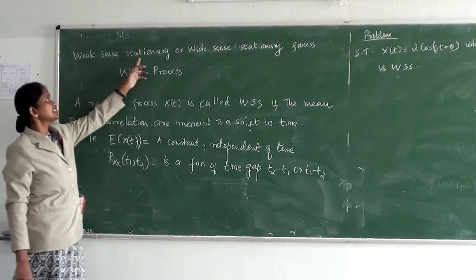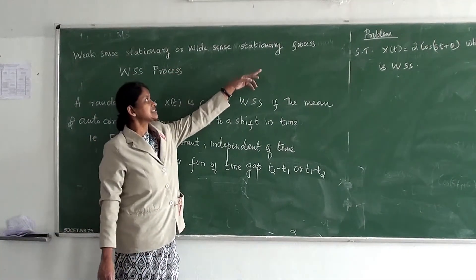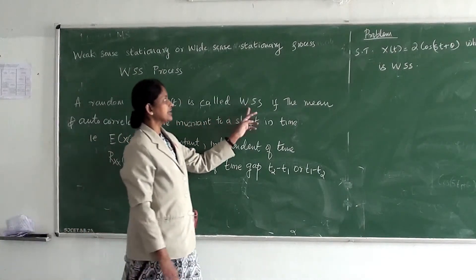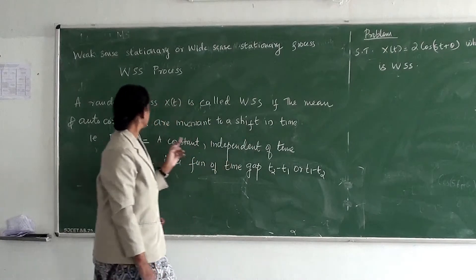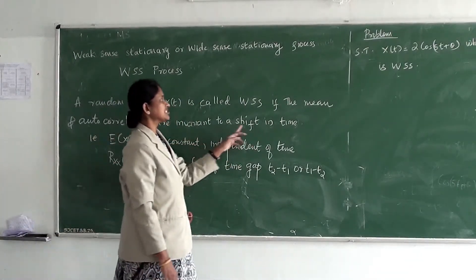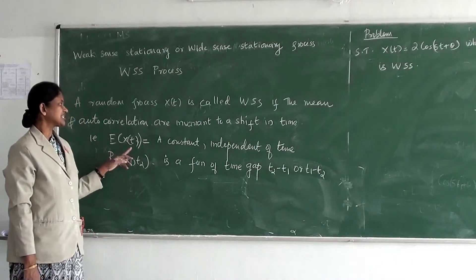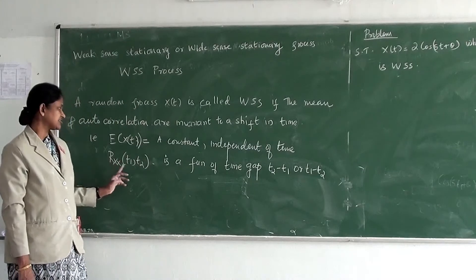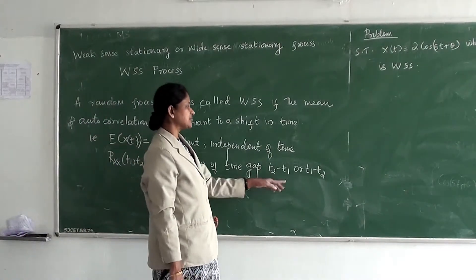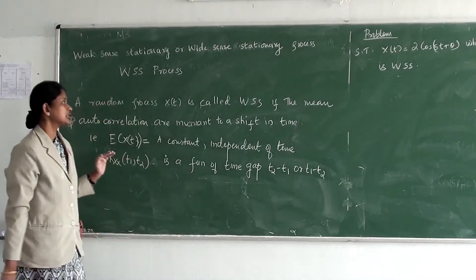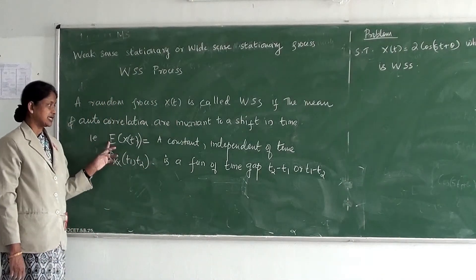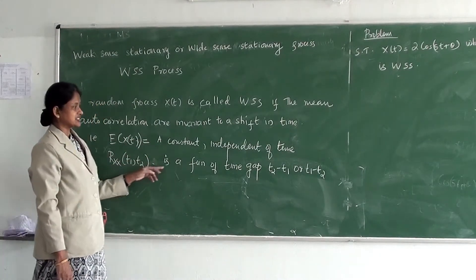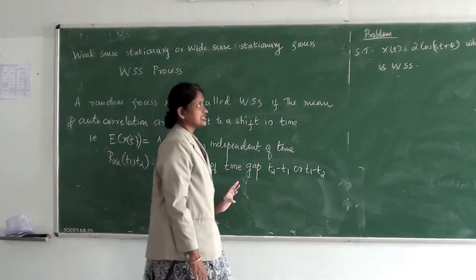The next topic is Wide Sense Stationary, or WSS process. A random process X(t) is called a WSS process if the mean and autocorrelation are invariant to a shift in time. That means the expectation of X(t) is a constant, independent of time, and Rxx(t1, t2) is a function of the time gap t2 minus t1, or t1 minus t2. To prove a process is WSS, first we find E[X(t)], which must be a constant, and autocorrelation must be a function of t2 minus t1 or t1 minus t2.